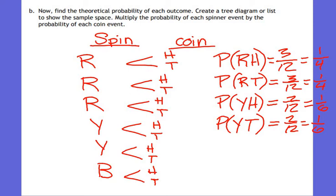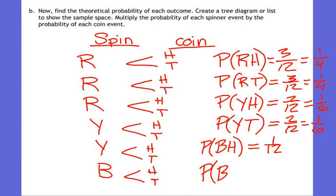Then blue heads out of twelve — how many times could blue heads occur? Once. 1/12. Then lastly, blue tails out of twelve — that would also occur once. 1/12. Any other possible outcomes? No. This was our theoretical data.